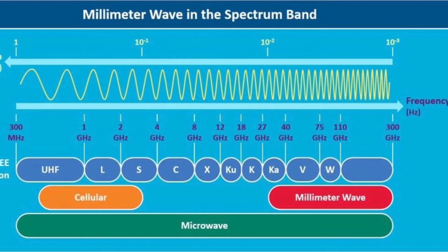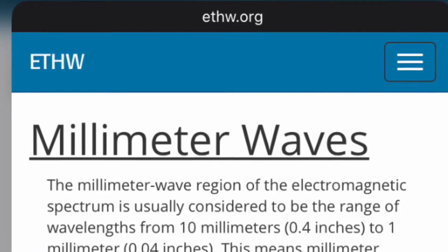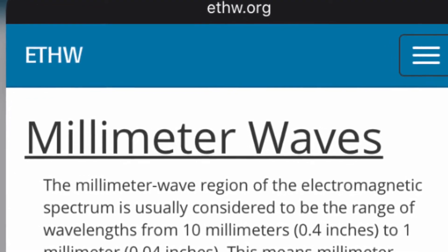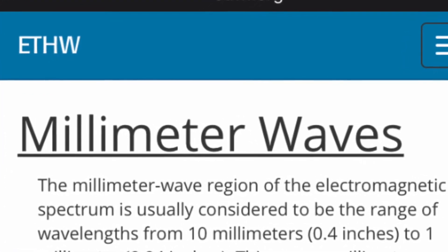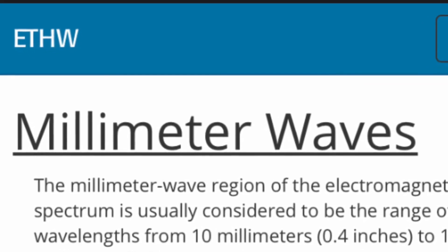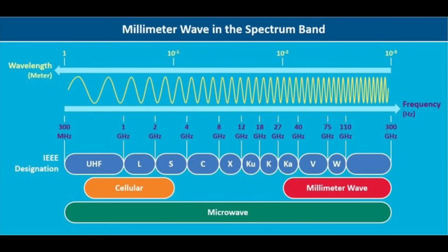Today I am on the Engineering and Technology History Wiki, ethw.org/millimeter_waves. The millimeter wave region of the electromagnetic spectrum is usually considered to be the range of wavelengths from 10 millimeters, which is 0.4 inches, to 1 millimeter, or 0.04 inches.